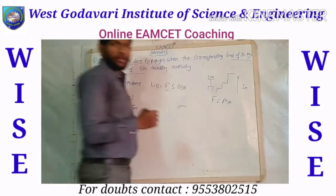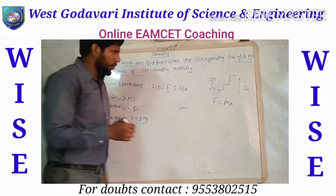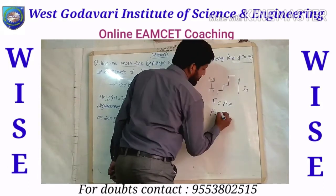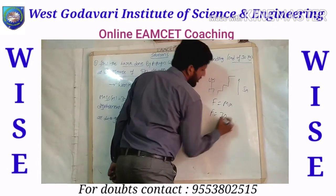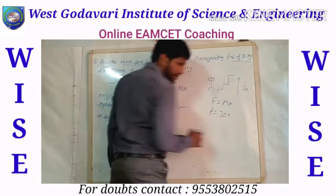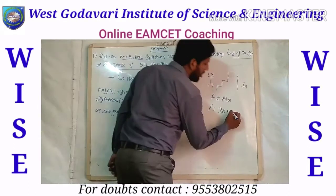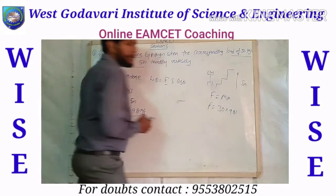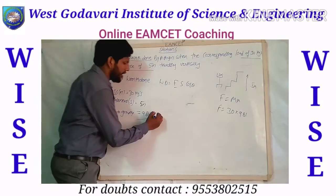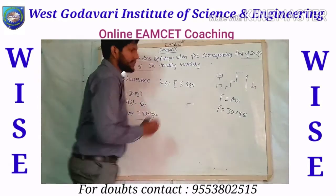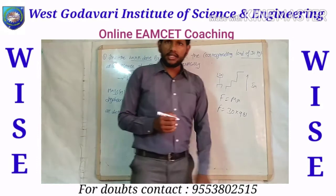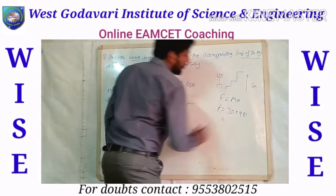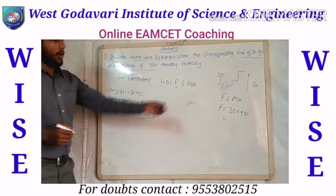Using F = ma, the mass is 30 kg and the acceleration is taken as acceleration due to gravity, which is 9.81 meters per second squared. So the force value is calculated from this formula and then we multiply with the displacement.